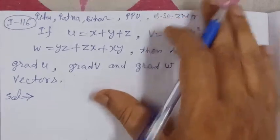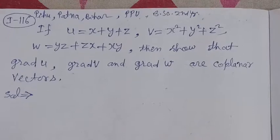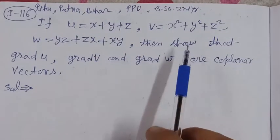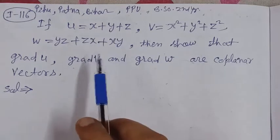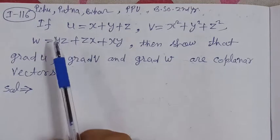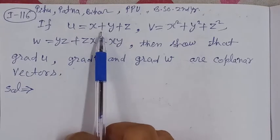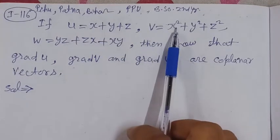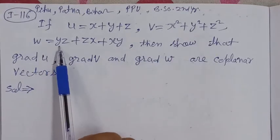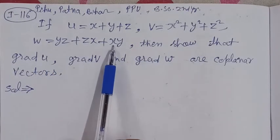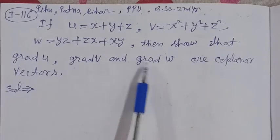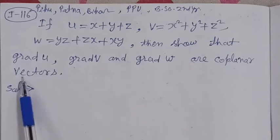Bismillahirrahmanirrahim. On the demand of PPU — Patna Bihar University — second year students, this problem is vector analysis. If u equals x plus y plus z, v equals x squared plus y squared plus z squared, and w equals yz plus zx plus xy, then show that grad u, grad v, and grad w are coplanar vectors.